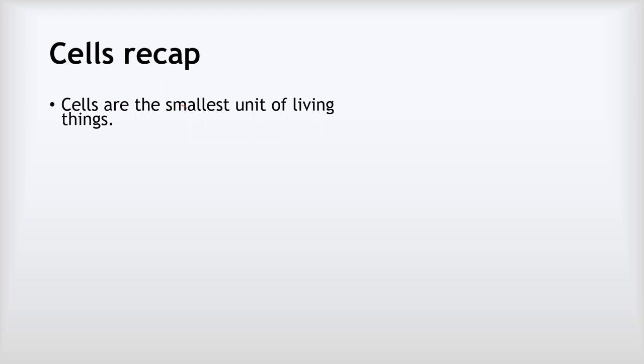Cells are the smallest unit of living things — the smallest part of a living thing that can still be considered to be alive. Cells themselves are made up of smaller structures, but those structures aren't alive. It's only when you bring them all together to produce a cell that we can consider something to be alive.